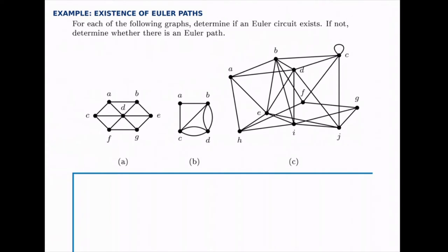Let's go through and count the degree for each node, starting with graph A. The degree of A is 3, and so is B, and all of the ones outside have a degree of 3, and then node D has a degree of 6. So as soon as we found that more than two of them had odd degree, we know that there is no Euler circuit for part A.